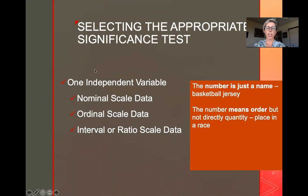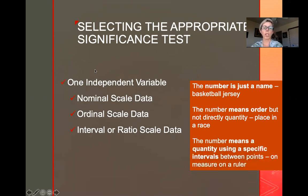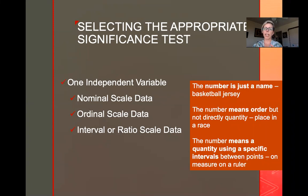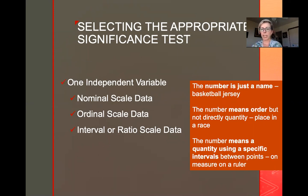The last type is interval or ratio scale data. This is when we're talking about a quantity using an interval that's specific and consistent — like points on a ruler. The difference between interval and ratio is that for ratio, there's a true zero; for interval, there may not be. But essentially, most of the more complex statistics require you to have interval or ratio data.